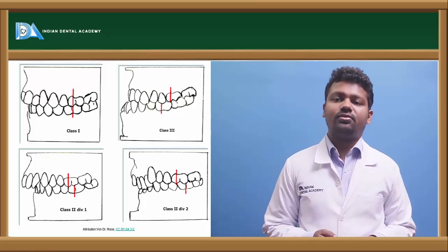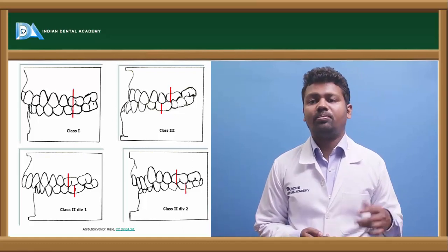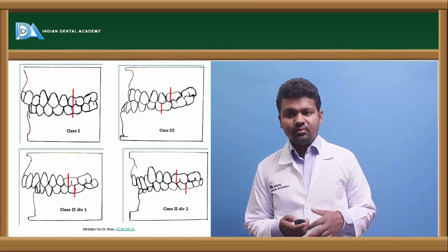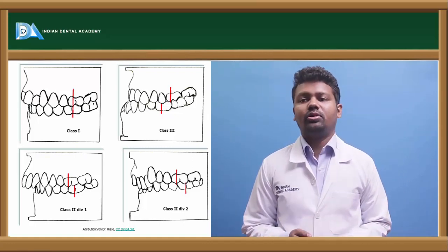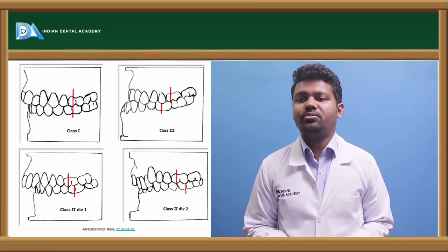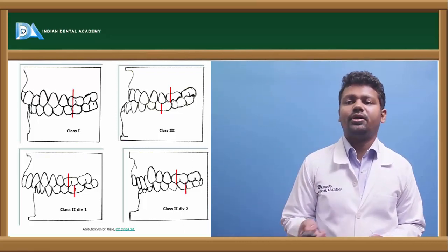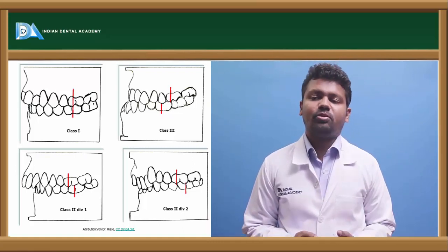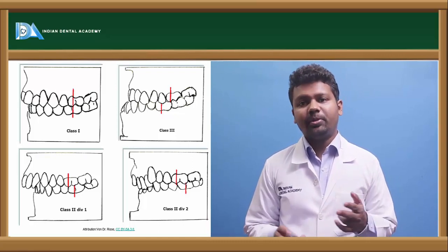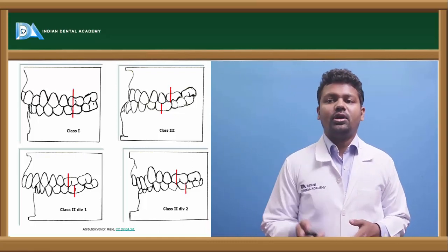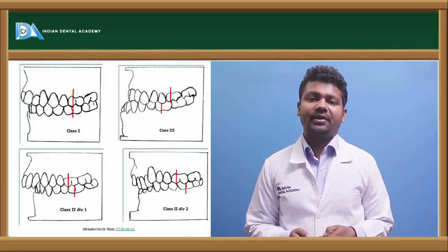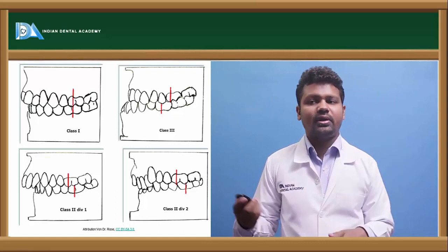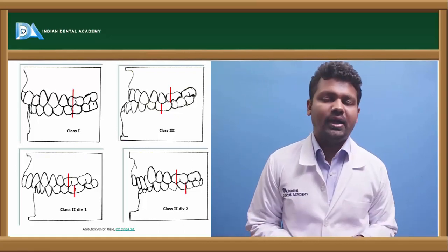In Class 2 Division 1, the mesial cusp of the upper maxillary first molar is occluding with the interdental space of the second premolar and first molar. In Class 2 Division 2, the mesial cusp of the upper maxillary molar is occluding with the interdental space of the second premolar and first molar, but there is retroclination of the anterior teeth. In Division 1 there is protrusion of anterior teeth, whereas in Division 2 there is retroclination of anterior teeth.